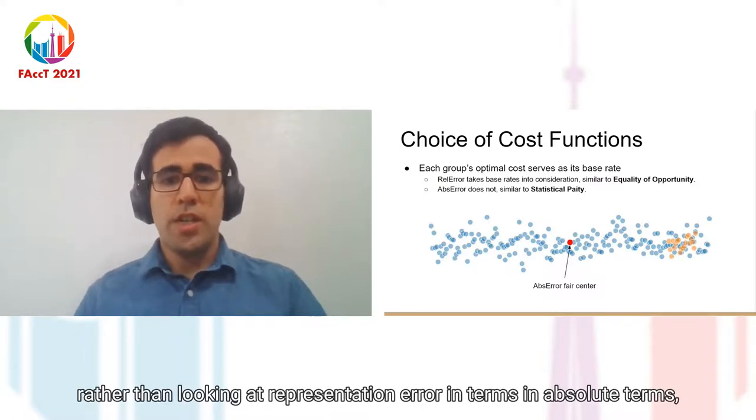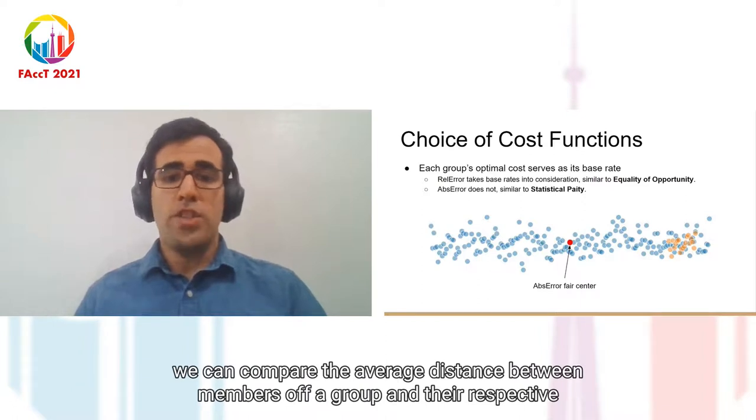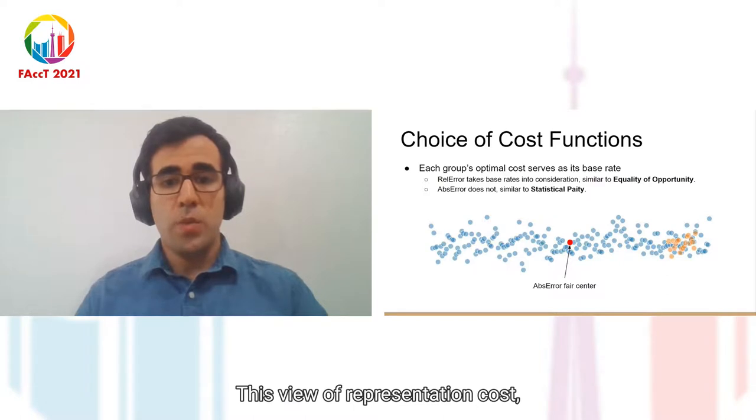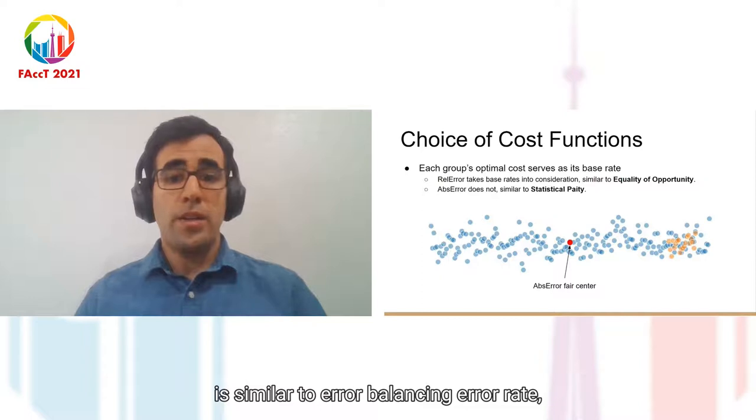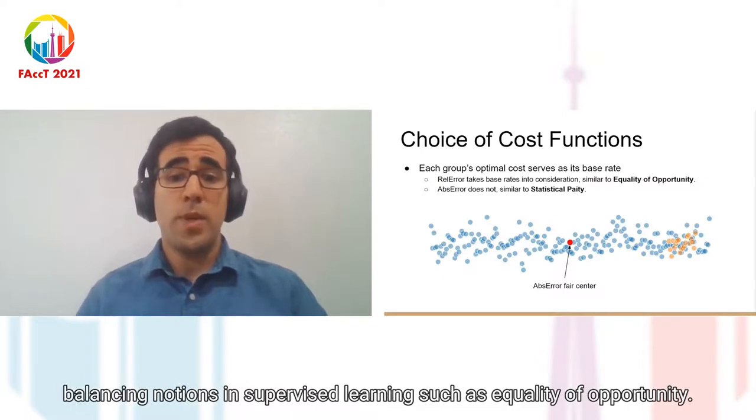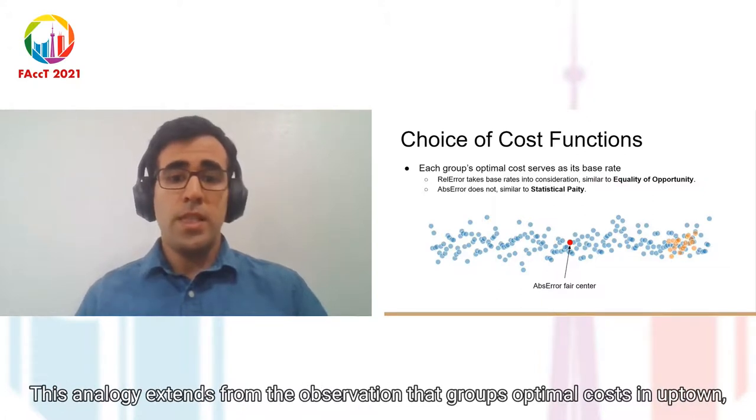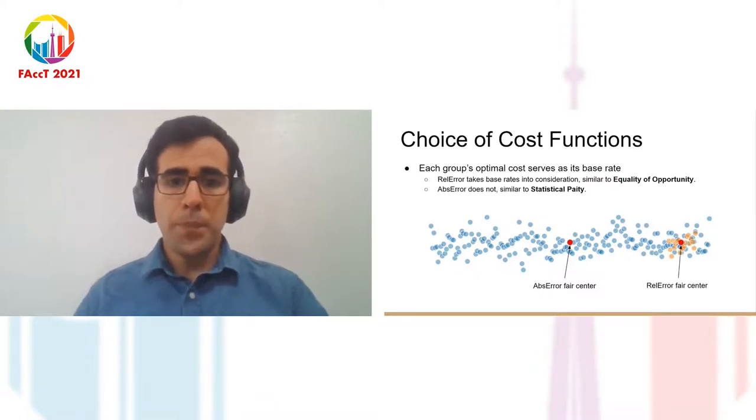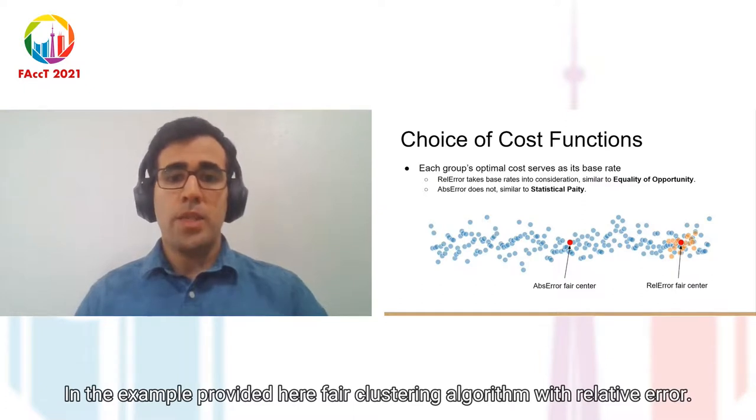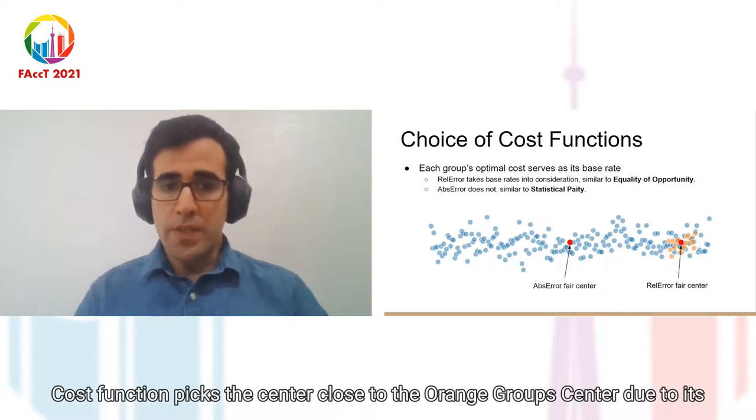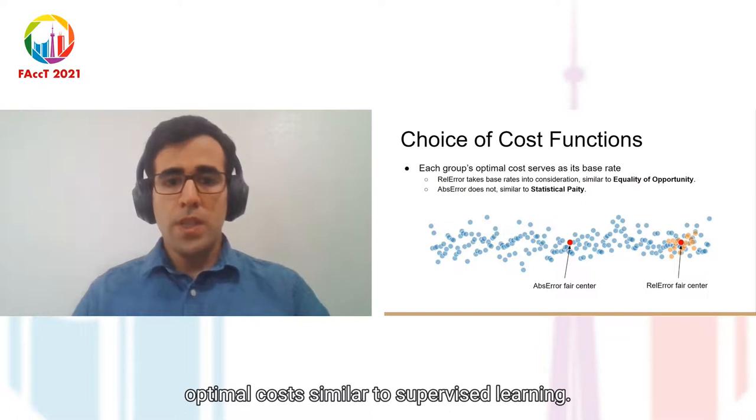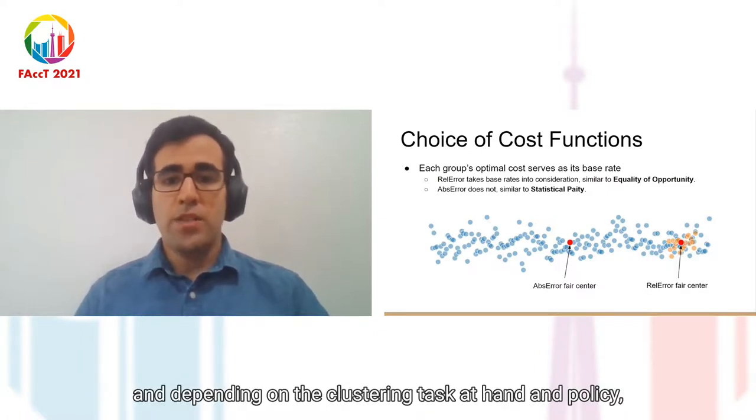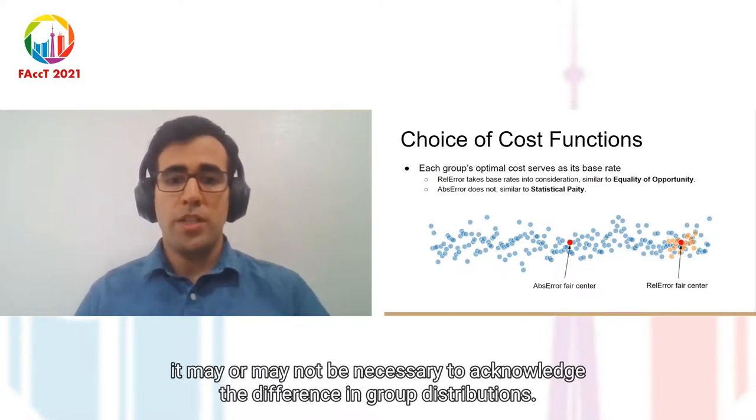However, rather than looking at representation error in absolute terms, we can compare the average distance between members of a group and their respective cluster centers to the corresponding optimal value for that group. This view of representation cost, which is captured by relative error cost function, is similar to error rate balancing notions in supervised learning, such as equality of opportunity. This analogy stems from the observation that groups' optimal cost in unsupervised learning is equivalent to groups' base rates in supervised learning. In the example provided here, a fair clustering algorithm with relative error cost function picks a center close to the orange group's center due to its considerably smaller optimal cost. Similar to supervised learning, neither of these notions is preferred over the other in all applications, and depending on the clustering task at hand and policy, it may or may not be necessary to acknowledge the difference in group distributions.